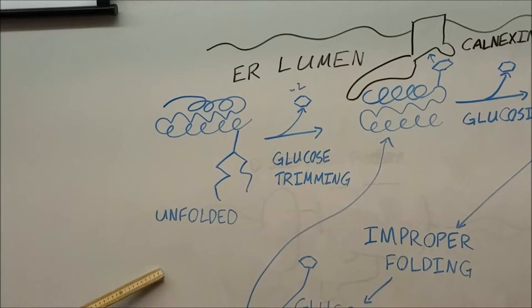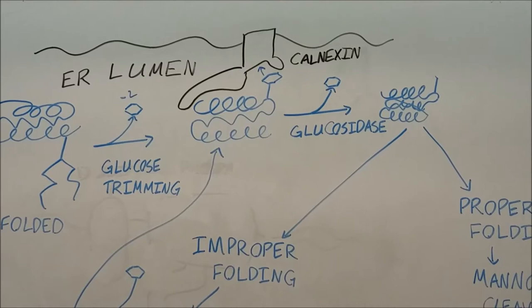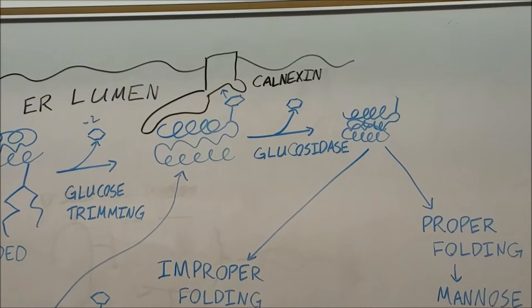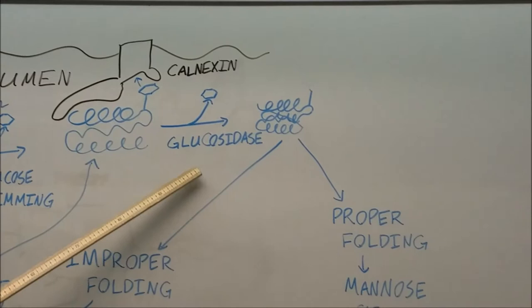The next step is that the unfolded protein will go through glucose trimming, where two of its terminal glucose residues will be removed. The final terminal glucose will bond to calnexin, which is a chaperone protein that will help the protein go through its folding process.